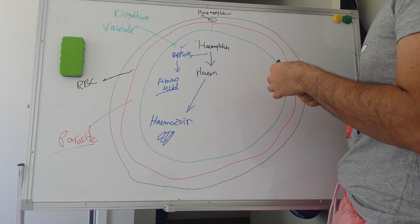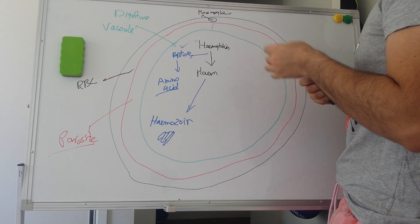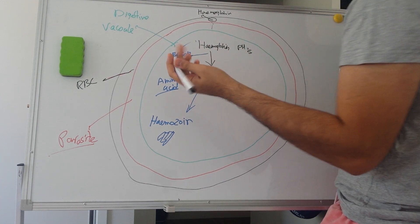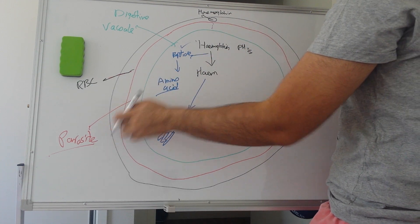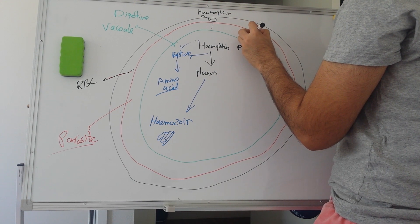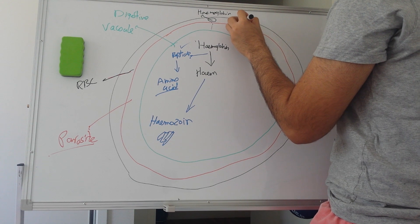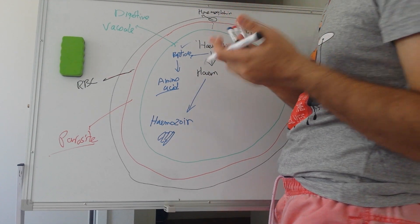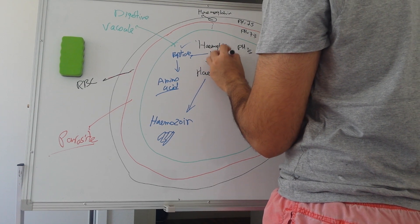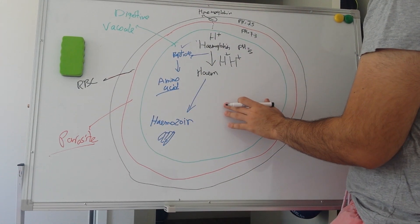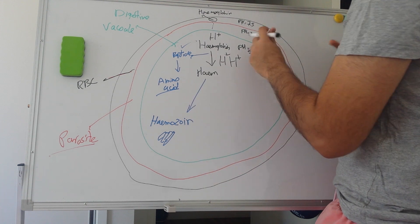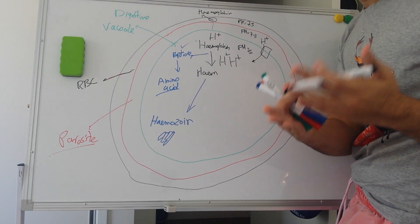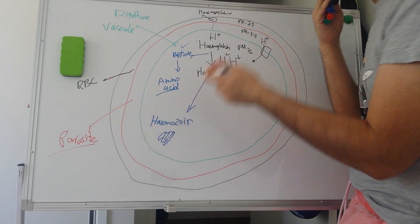The pH inside the digestive vacuole is around 5 — pretty acidic. Outside the digestive vacuole but still inside the parasite it is about 7.3, and inside the red blood cell it is around 7.5. This process only occurs if the digestive vacuole is acidic, meaning there is a high concentration of hydrogen ions inside it. So the parasite has a pump that pumps hydrogen ions into the digestive vacuole, but this is against the concentration gradient.